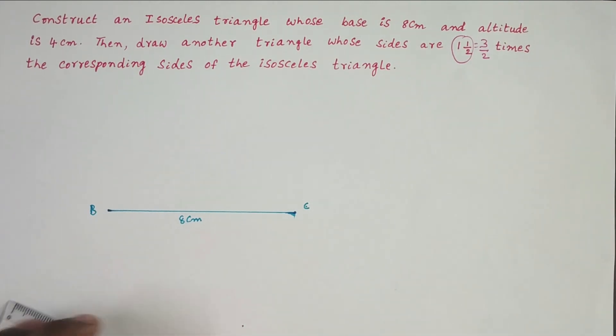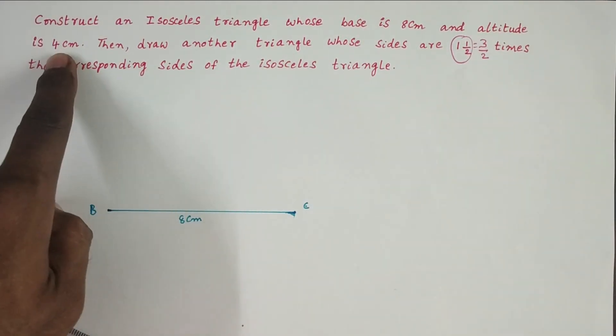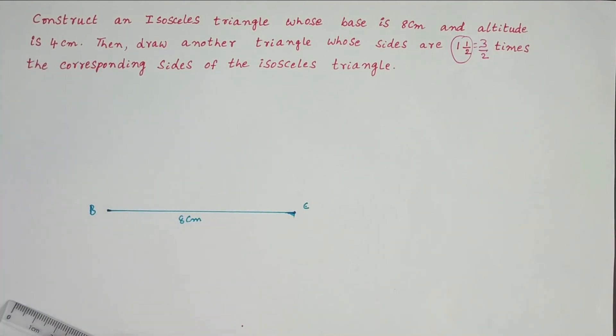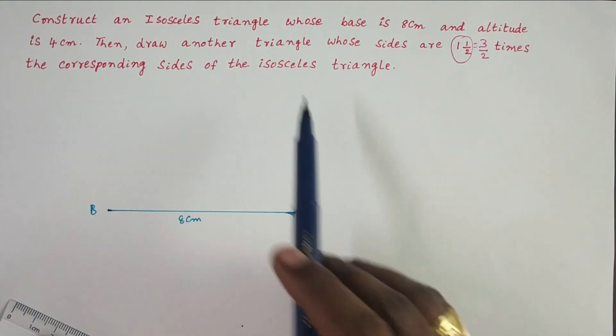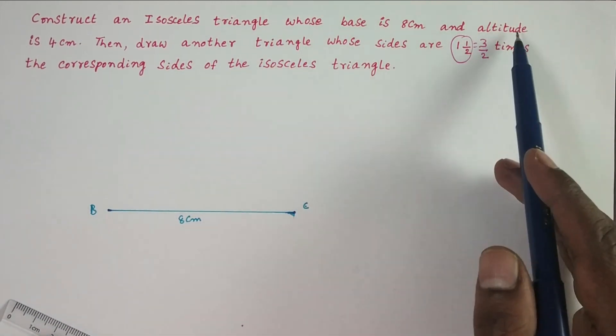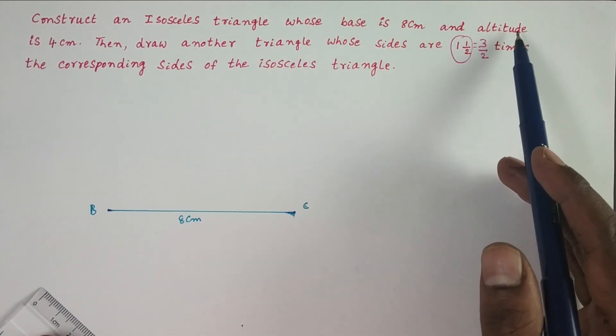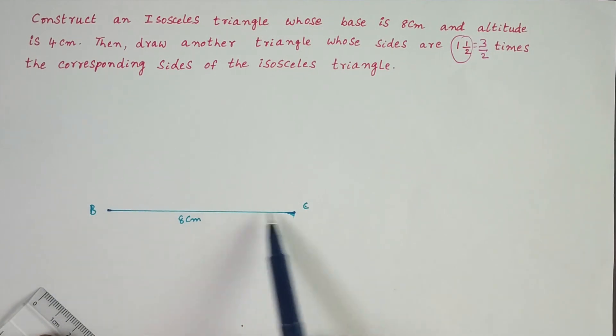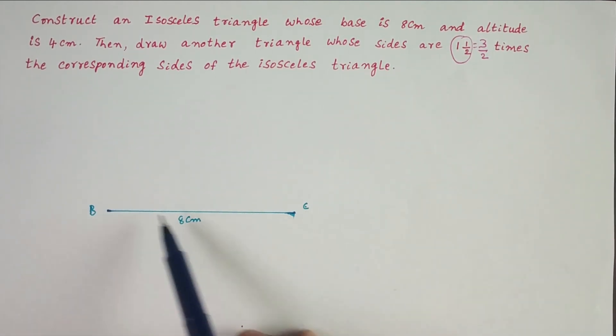The altitude is given as 4 cm. Altitude means this given triangle is an isosceles triangle, so the altitude will be the perpendicular bisector of this base. Construct a perpendicular bisector of BC.